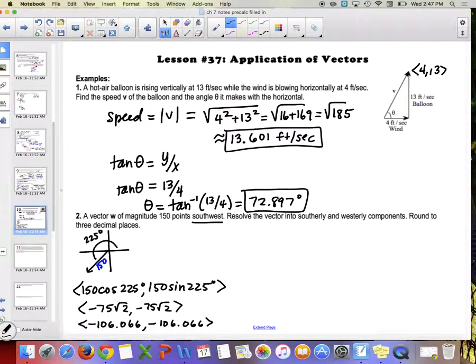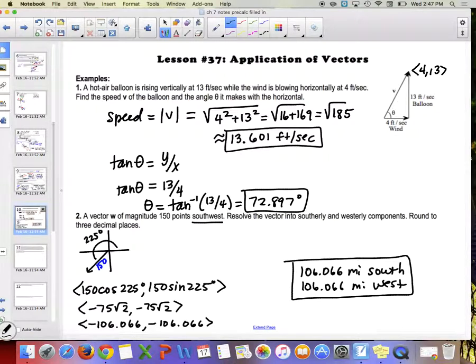So the component form is going to be 150 cosine of 225 and then it's going to be 150 sine of 225. So we end up getting, when I found these numbers, you could find the exact form which is negative 75 root 2 and negative 75 root 2, because 225 is like a unit circle value. But if you found like the actual three decimals, both of them are negative 106.066. So when it says things like resolve into southerly and westerly components, I would probably write something like 106.066 miles south and 106.066 miles west. Does that make sense?